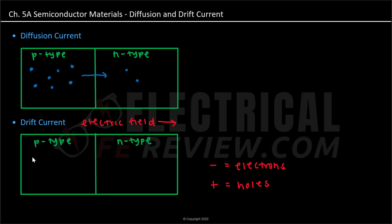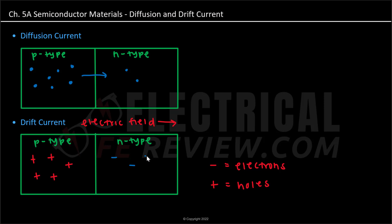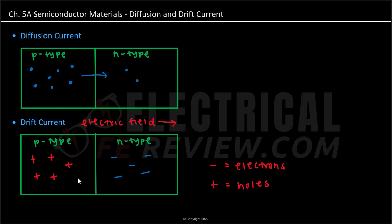So for example, if we have positive charges or holes on the left-hand side for p-type and negative charges on the right-hand side, which are electrons in the n-type, we can note that holes move in the same direction as the electric field. Since we noted already that our electric field is moving towards the right, we know that holes are also moving in the same direction.